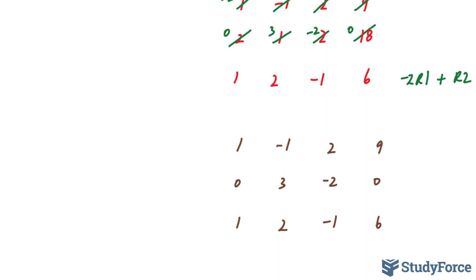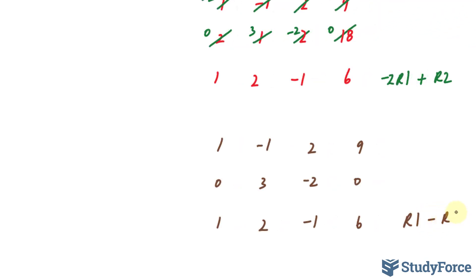As you can see now, row 2 starts with a 0. We want to do the same thing for this 1. We want to make it into a 0, and to do that, we can replace row 3 by subtracting row 1 with row 3. And to document that, I'll write down row 1 minus row 3. Whatever those are equal to, we'll replace the bottom.